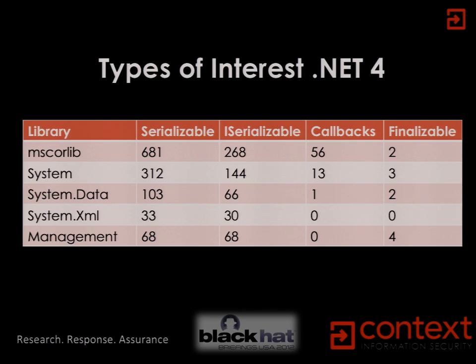There are also other mechanisms — for example, callbacks, so general 'on deserialization run this bit of code' hooks. There's also finalization, which is effectively destructors in a C++ sense but for .NET. These are bits of code which run to make sure you can clean up all your managed resources before the object gets disposed of by the garbage collector. There were two such cases in MSCorLib.